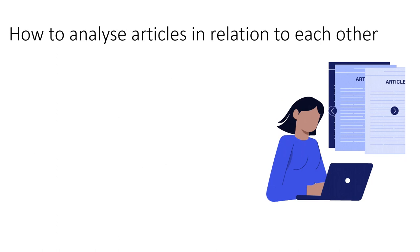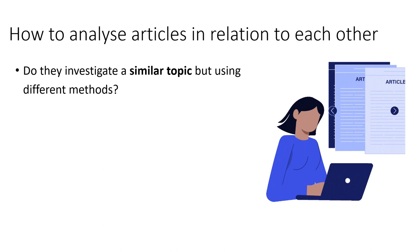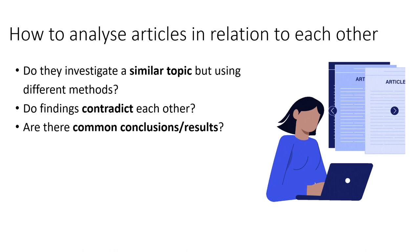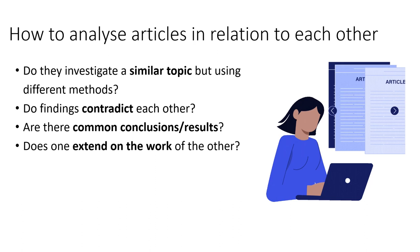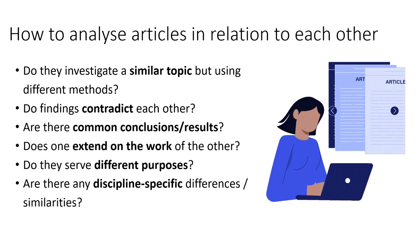You may also like to analyze articles in relation to each other. This goes beyond just looking at how reliable they are — you can also look at their findings. Do two articles investigate similar topics but use different methods or subject groups? Do their findings support or contradict each other? Are there common conclusions that are similar between the two? Does one work extend on the other, or do they serve different purposes entirely? Are there any discipline-specific differences or similarities? Are they from different fields, for example?